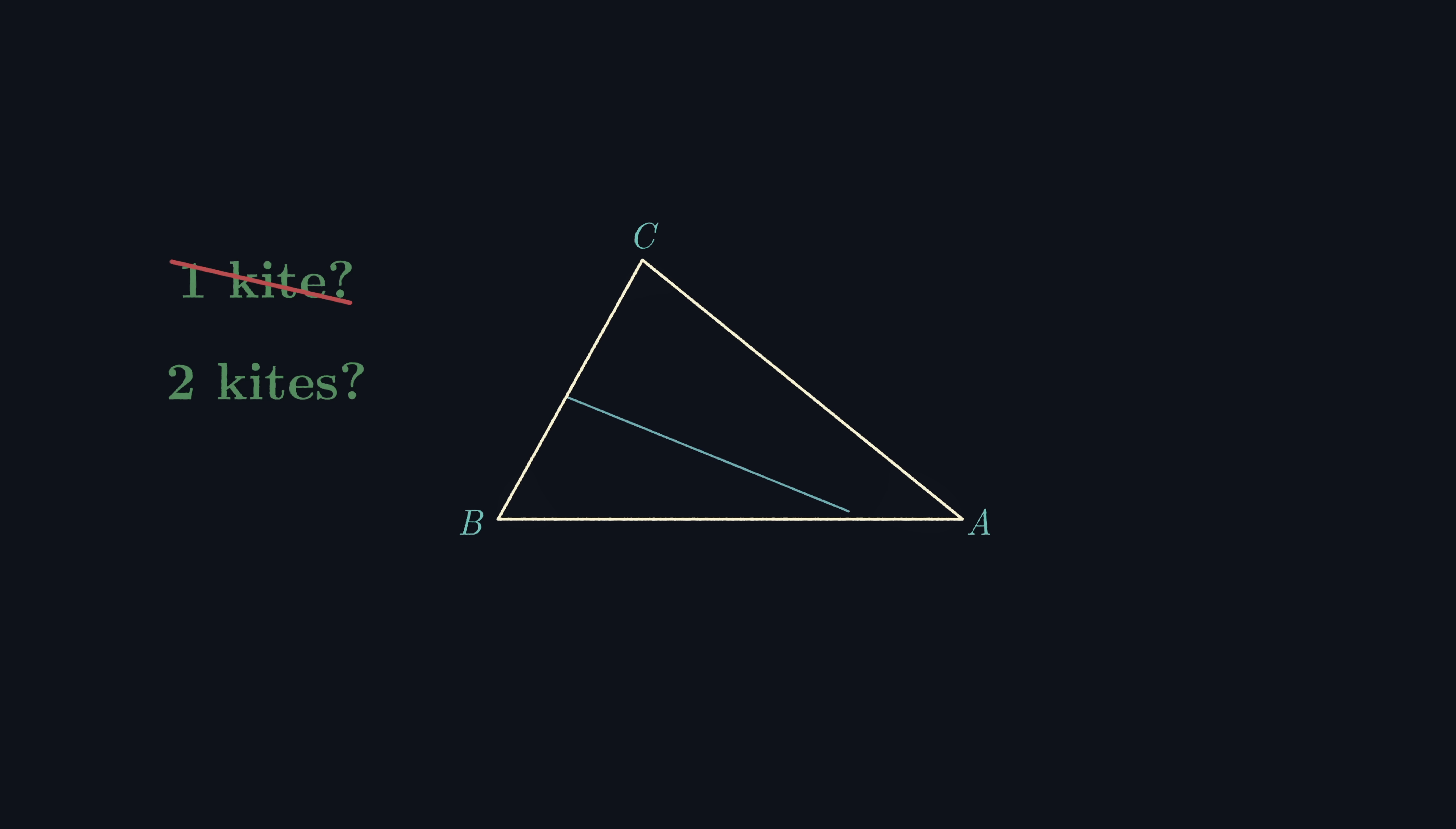But how about trying to get two kites? Well, if we make one cut, then one of the leftover shapes will be a triangle, not a kite. If we make three or more cuts, then we'll have a polygon with five or more sides. Again, not allowed.